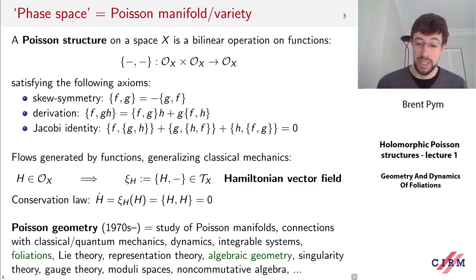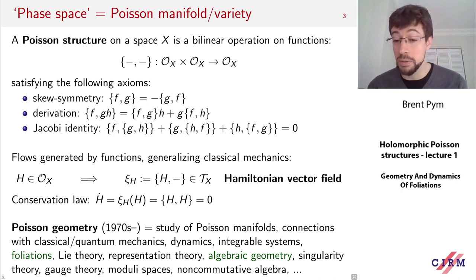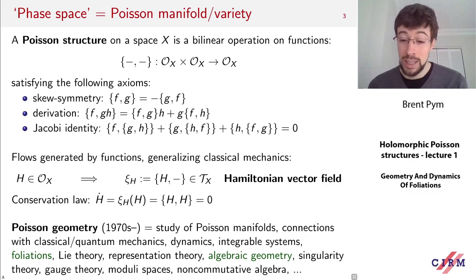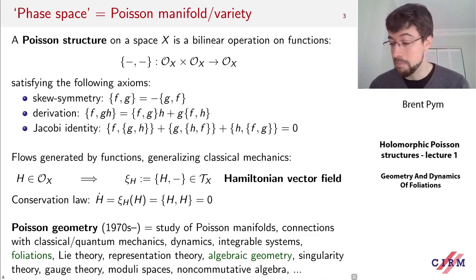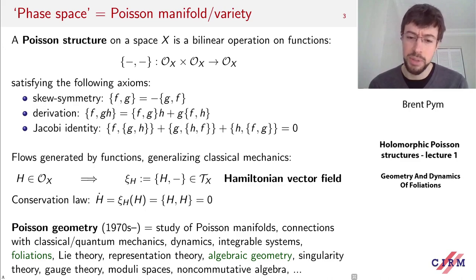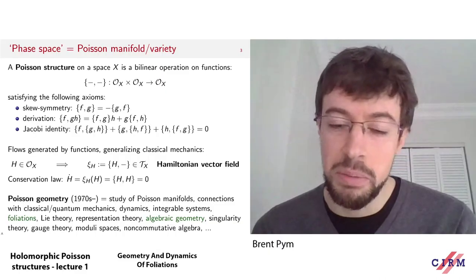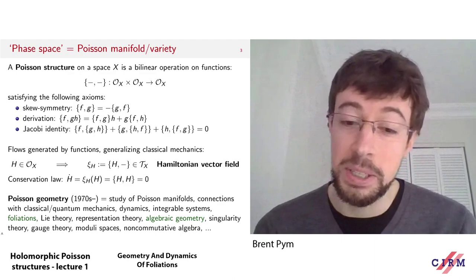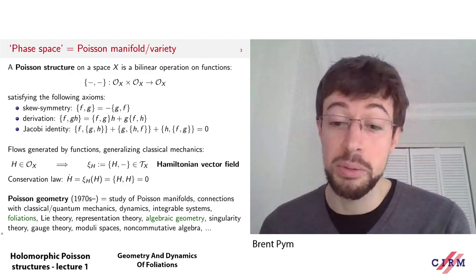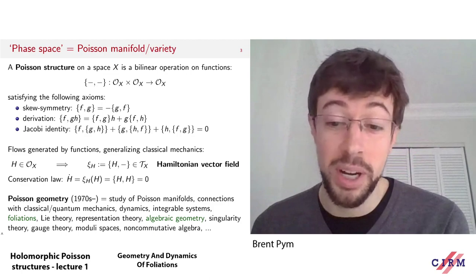Poisson geometry is, quite simply, the study of manifolds equipped with Poisson brackets, or maybe more singular spaces like varieties. Of course it has origins in classical mechanics and also in the work of Lie on Lie algebras and Lie groups. It really became a subject in its own right starting in the 1970s and 1980s with the work of Lichnerowicz and Weinstein. Nowadays it's connected to many different parts of mathematics; in this mini course I'll be focusing mostly on connections with foliation theory and algebraic geometry.